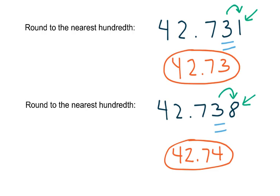Another thing to think about when rounding is, yes, there are rules and those rules work — if the space to the right is five or bigger, we round up; if the space to the right is four or lower, we round down. But another way to think about it: when you look at 42.731, is that closer to 42.73 or 42.74? It's closer to 42.73. And 42.738 — is that closer to 42.73 or 42.74? It's closer to 42.74. So that's another check you can use to make sure that you're rounding properly.